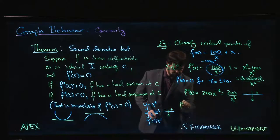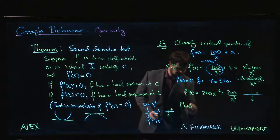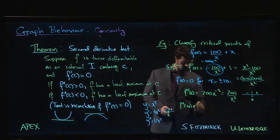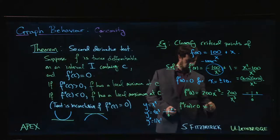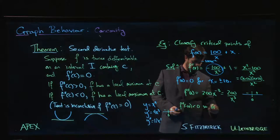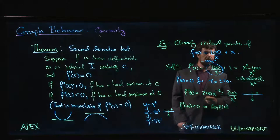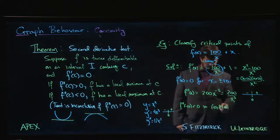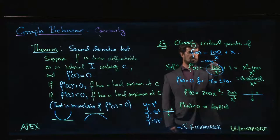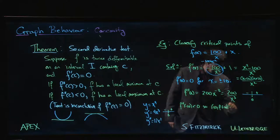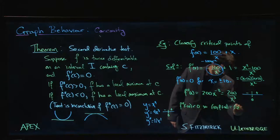That means that f''(-10) is negative, so at (-10, f(-10)), that's going to be a local max. We can work out what f(-10) is: 100 divided by -10 minus 10, so this is -10 minus 10 more, that's -20. So that's going to be a relative maximum.